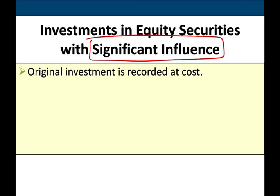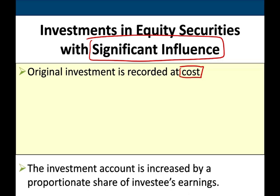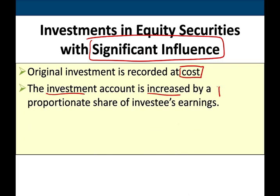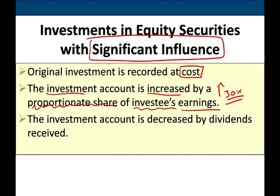So how do we account for investments in equity securities with significant influence? When you buy the investment, just like every other asset, it's initially recorded at cost. Then that investment is increased by the proportionate share of the investee's earnings. If you own 30% of the company, you increase your investment by 30% of the earnings they reported. If they report losses, you reduce your investment by 30% of their losses. Then you decrease your investment account by dividend received. Let me show you the T-account.